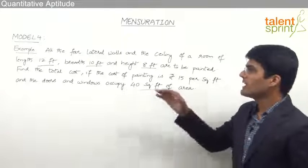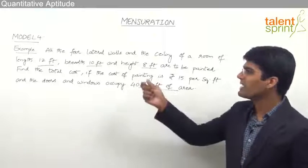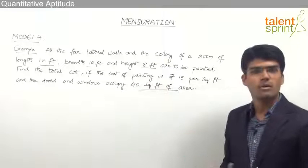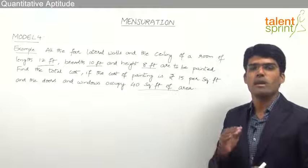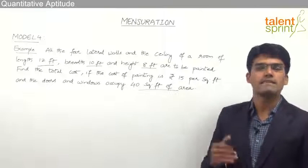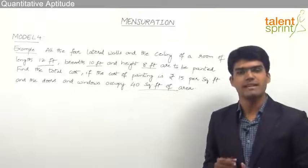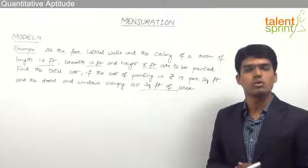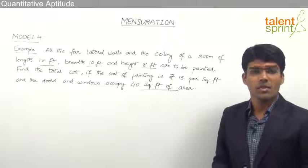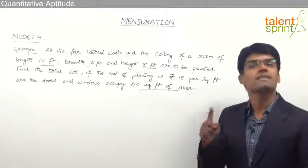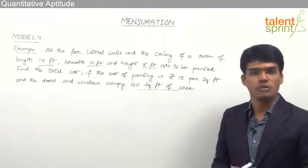From the question we can understand that the room is in the shape of a cuboid, because length, breadth and height are all different. In this cuboid we have to paint the four surrounding walls and the ceiling. So the total area to be painted can be taken as the lateral surface area of the cuboid plus the area of the ceiling, or it can also be taken as the total surface area of the cuboid minus the area of the floor.